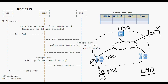The additional details the proxy binding update contains include the access link technology used by the mobile node. The handoff indicator specifies whether the handoff is between mobile access gateways — that is, the mobile node moved from one access gateway to another — or between interfaces of the mobile node, if the mobile node has two interfaces connecting to different technologies. This handoff type can also be indicated in the proxy binding update.